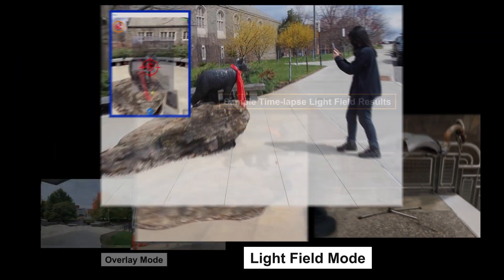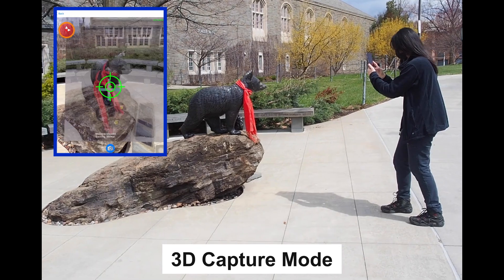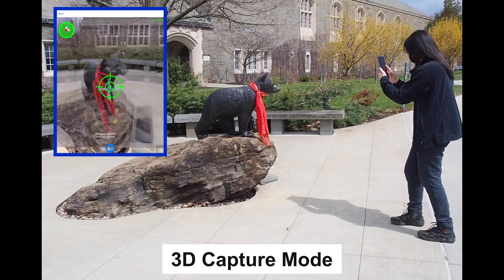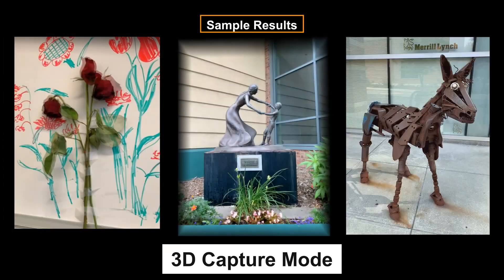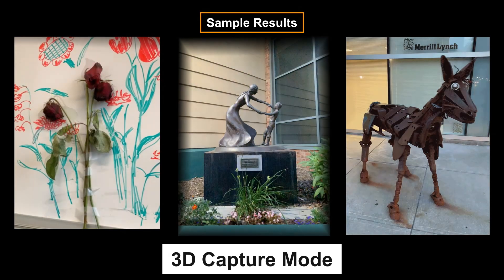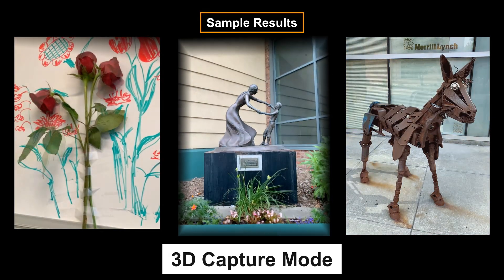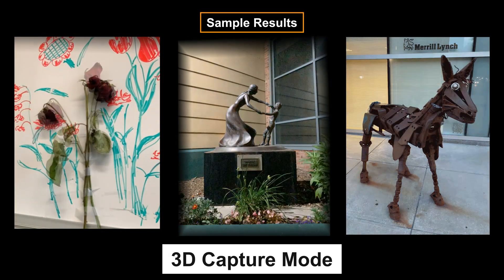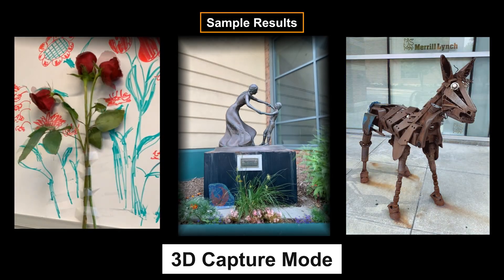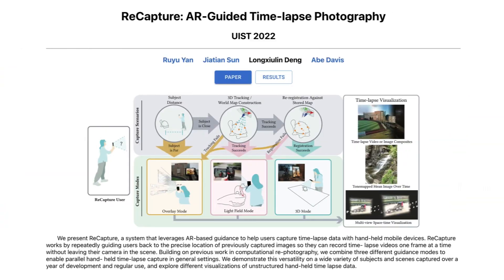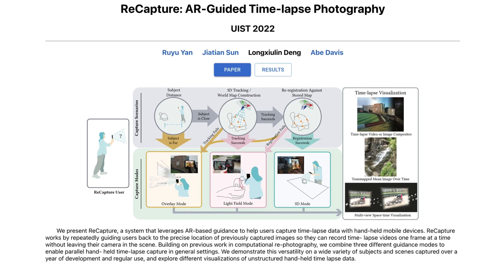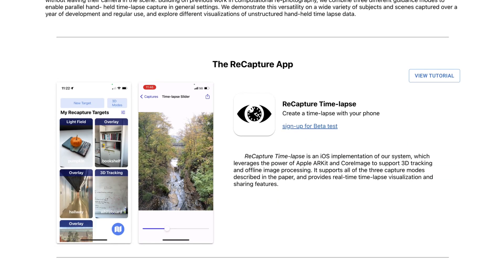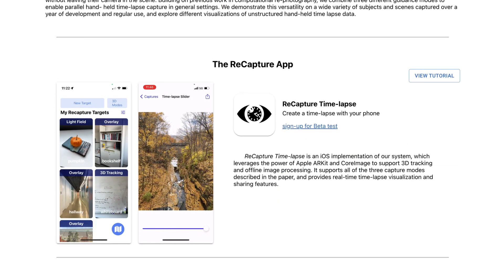Our third interface is a novel design targeted at helping users precisely re-photograph subjects that are closer to the camera. In our research, we studied how and when each of the three designs works best for capturing time-lapse, which you can read more about in our academic publication linked from the project website. We also turned this project into an iOS application, which you can download for free from the Apple App Store.